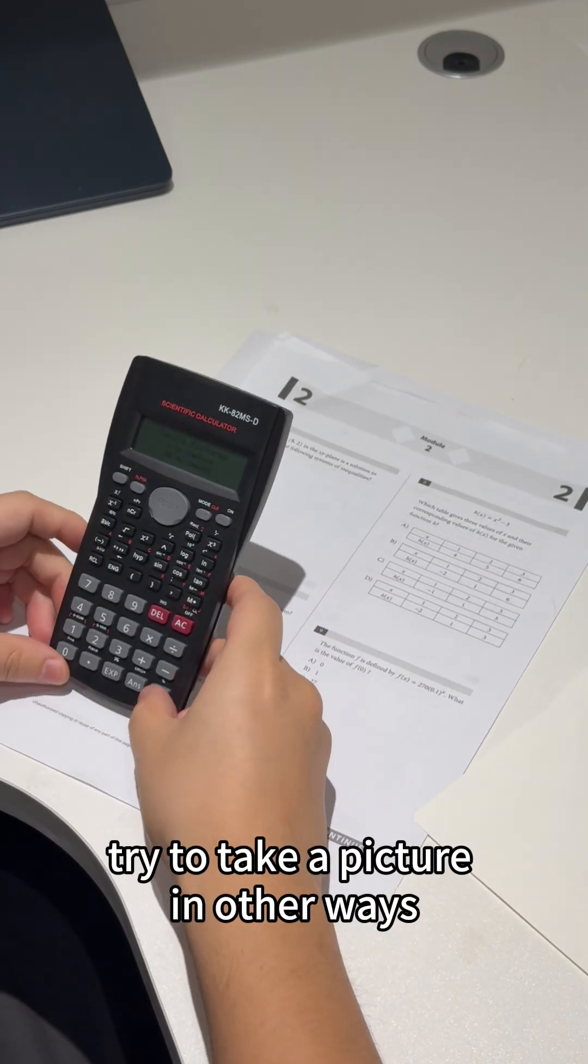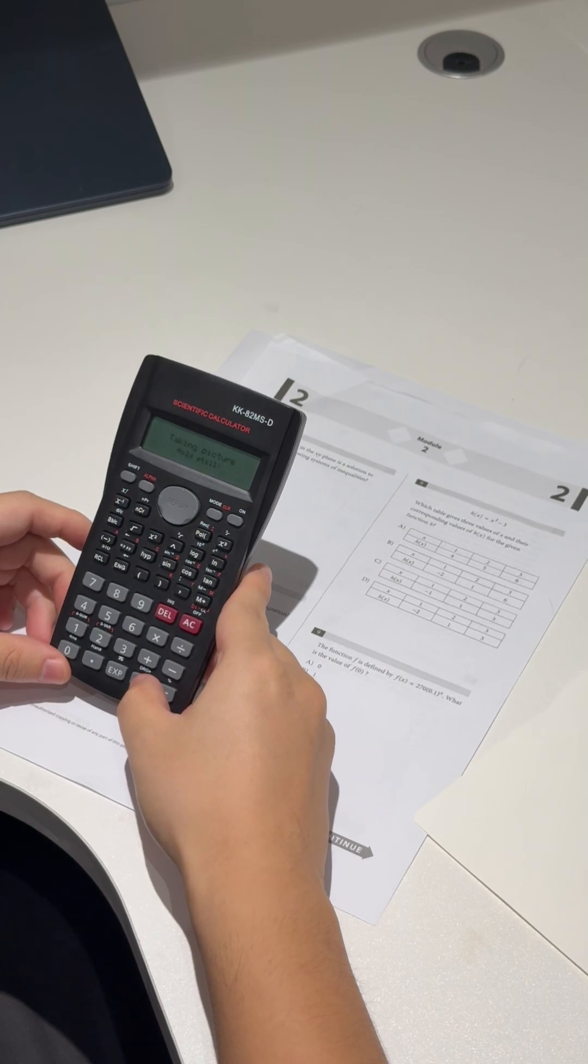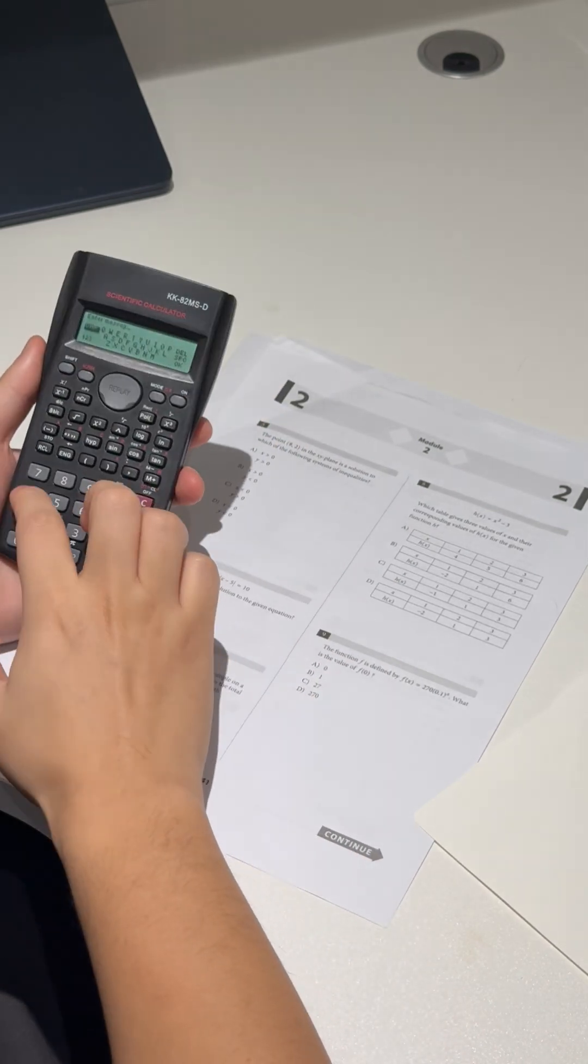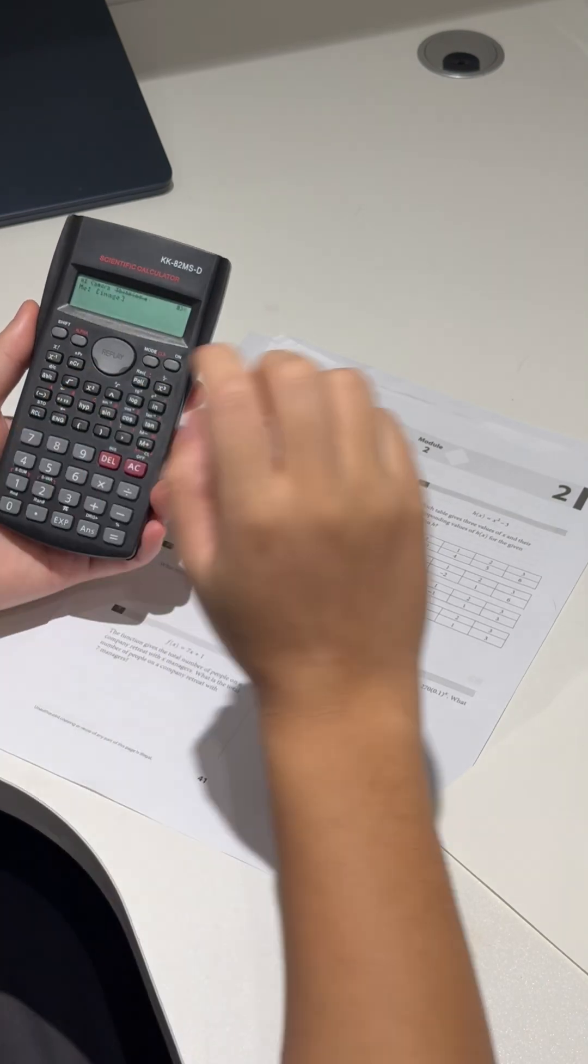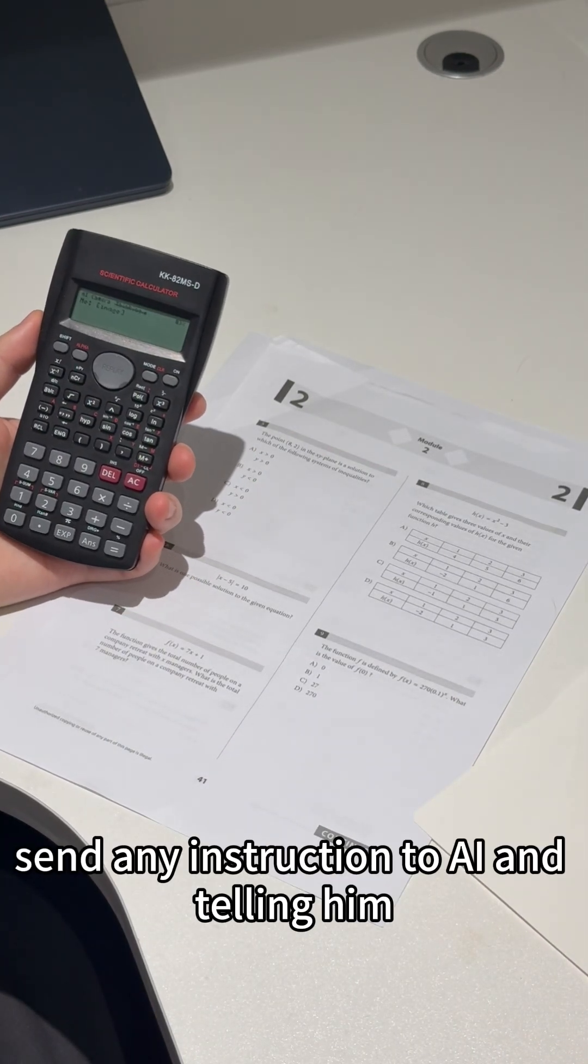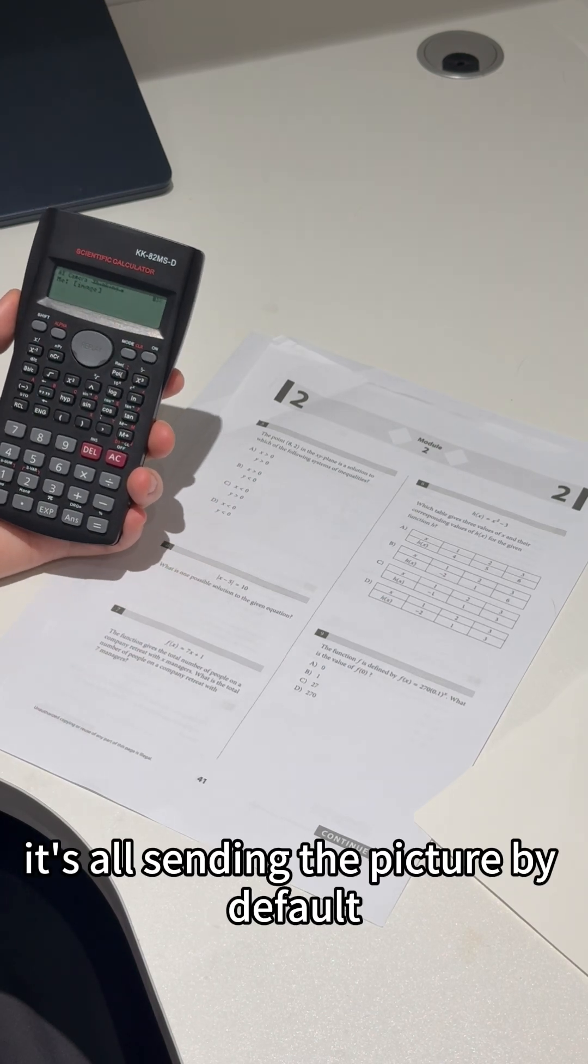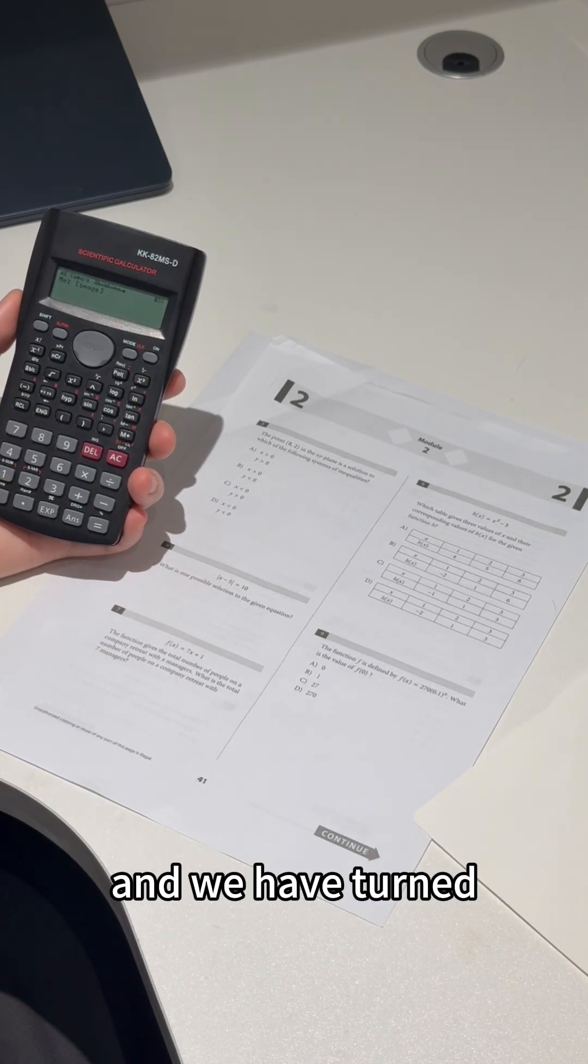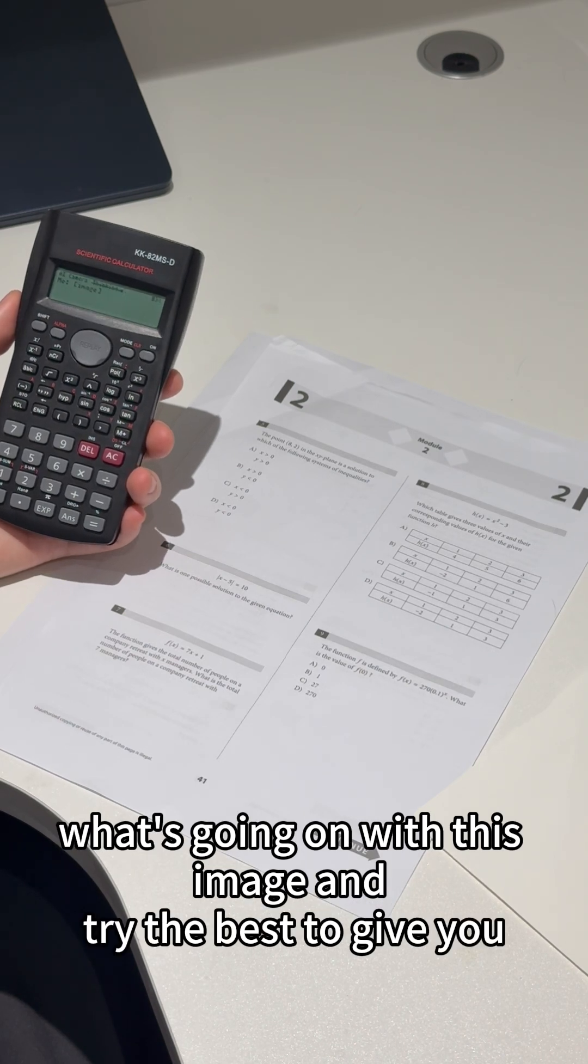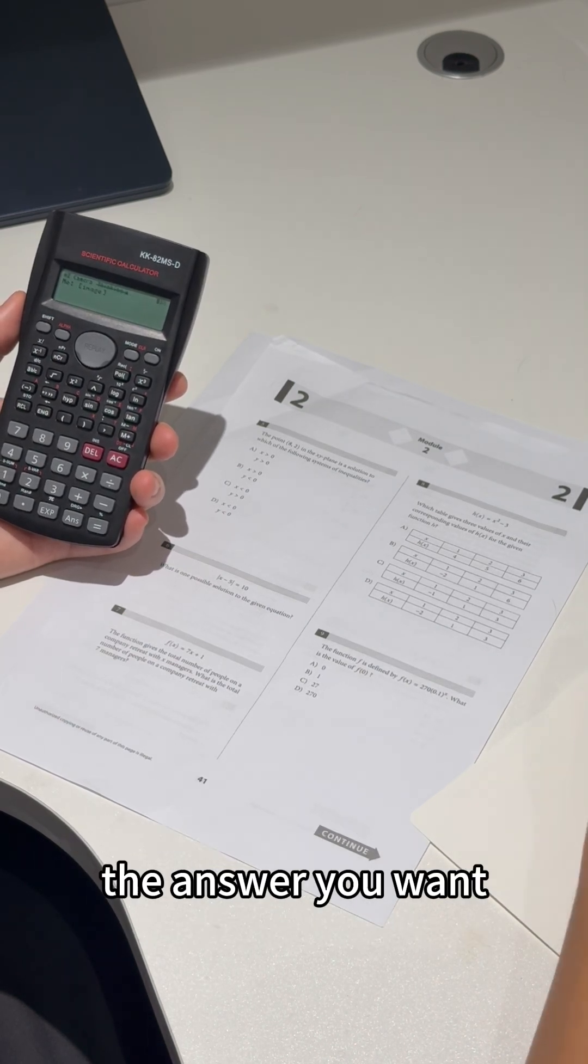Let's this time try to take a picture in sneaky ways. I'm not gonna send any instruction to AI telling him which question I wanted to get solved. It's all seen in the picture by default. We have taught our AI to figure out what's going on with this image and try its best to give you the answer you want.